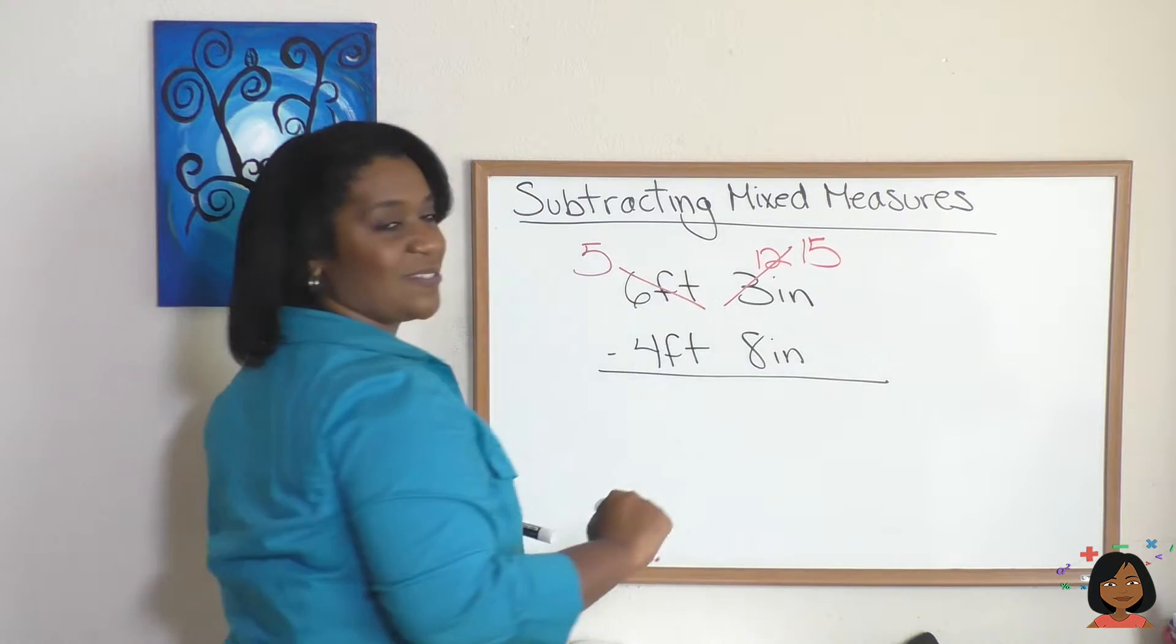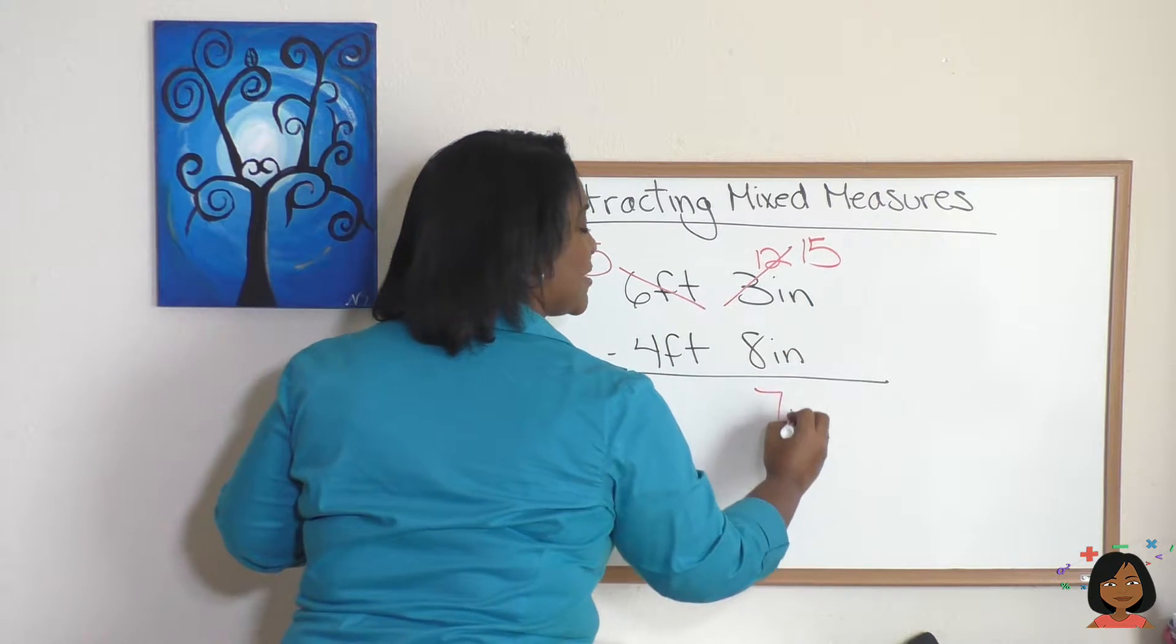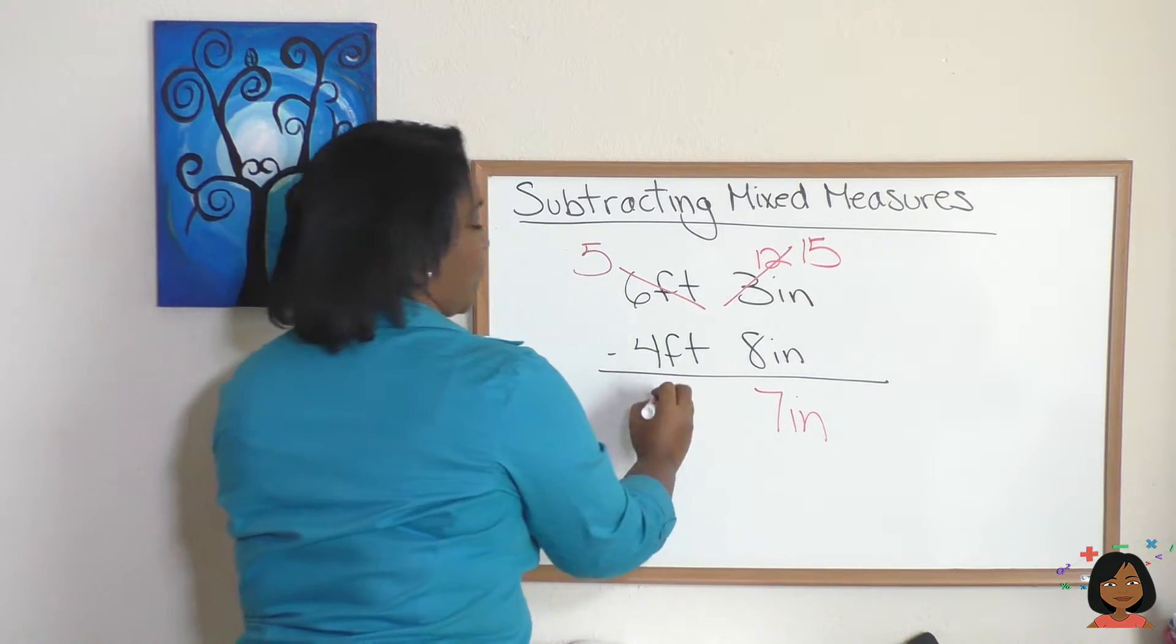Now we can subtract. 15 minus 8 is going to be 7. 5 minus 4 is going to be 1. So 1 foot 7 inches is your answer.